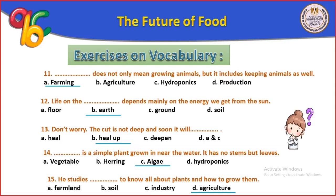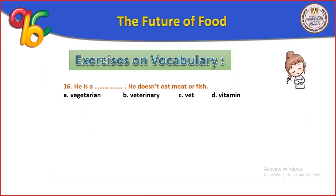Soil science is the science studying the soil. Hydroponics is water farming. In this unit, the future of food, we learned that we will plant meat — we will have burgers grown in a laboratory. He doesn't eat meat or fish — he is a vegetarian, إنسان نباتي.